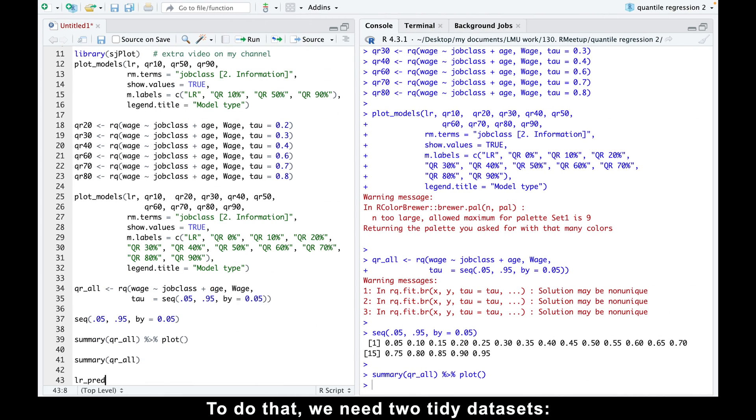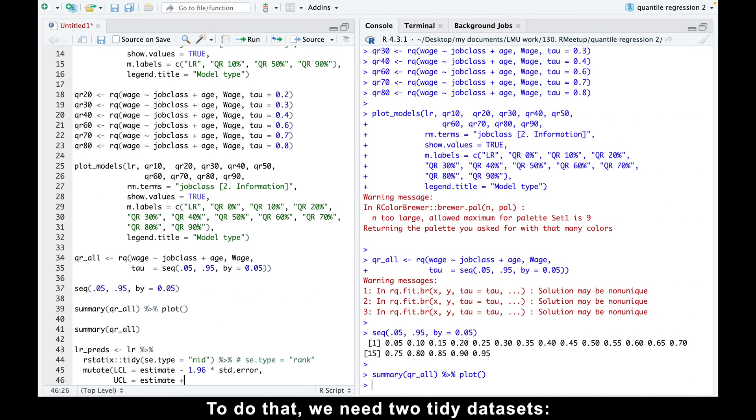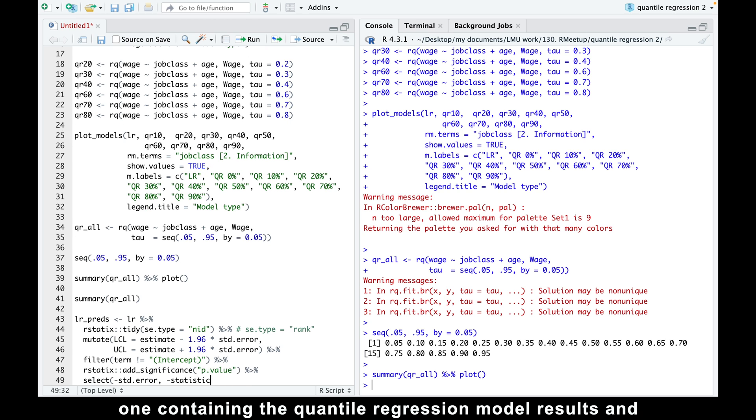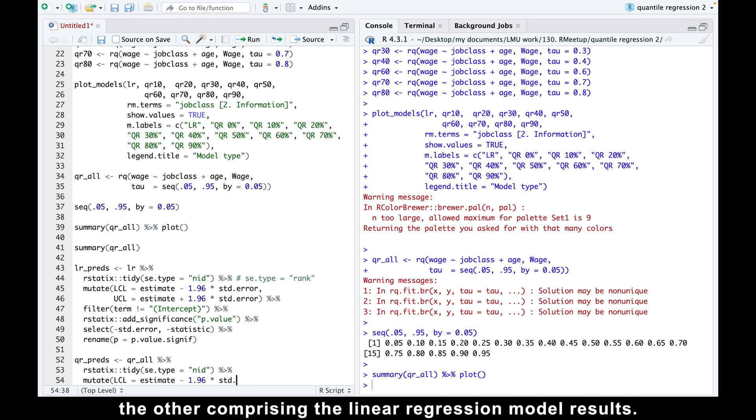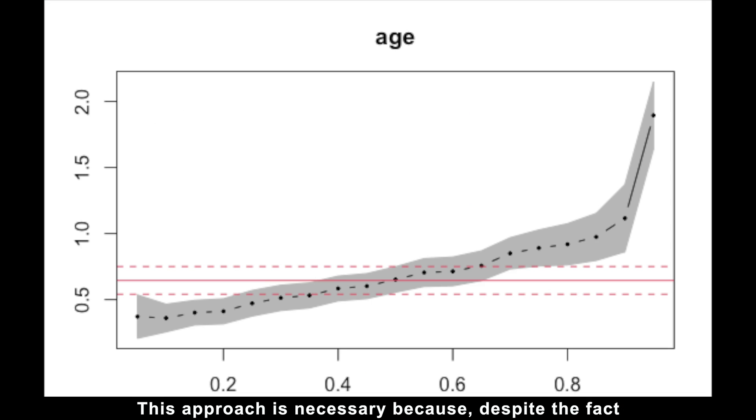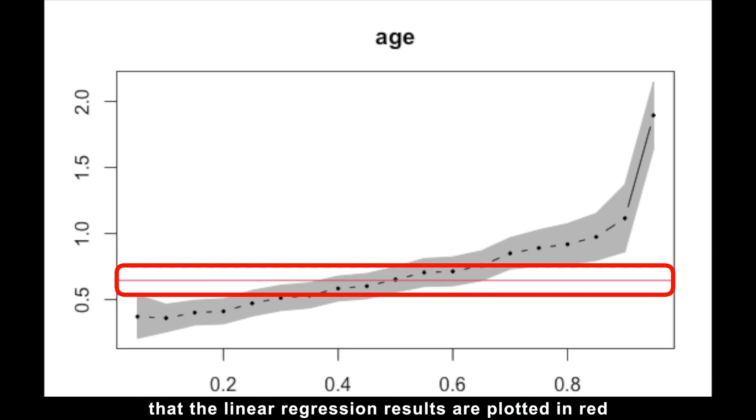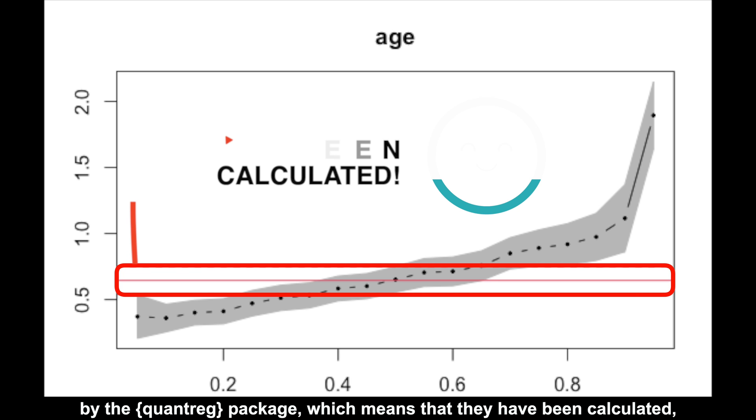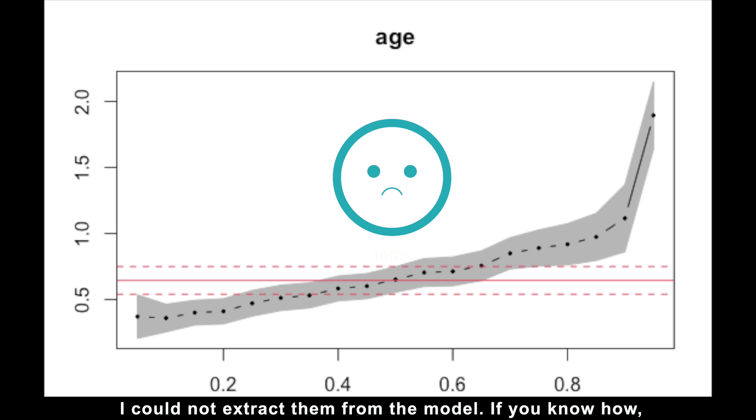To do that, we need two tidy datasets. One containing the quantile regression model results and the other comprising the linear regression model results. This approach is necessary because despite the fact that the linear regression results are plotted in red by the quantreg package, which means that they have been calculated, I could not extract them from the model.